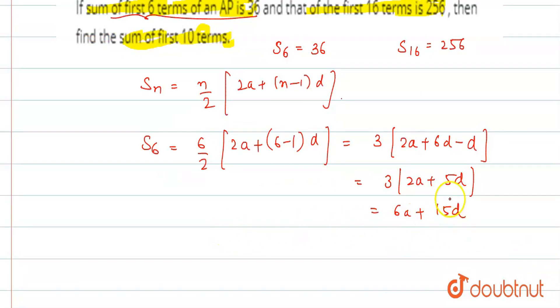This equals 36. So, 6a plus 15d equals 36. That means, we have one equation.